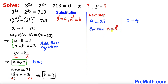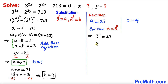Recalling our substitution, a equals 3^x. So 3^x equals 27. Since 27 can be written as 3³, we have 3^x equals 3³. The bases are the same on both sides, so we equate the exponents, giving x equals 3.